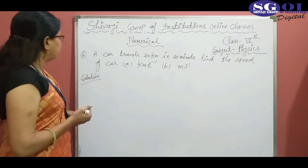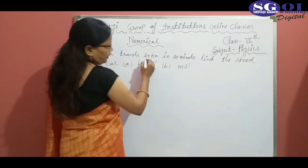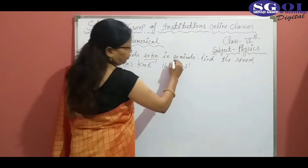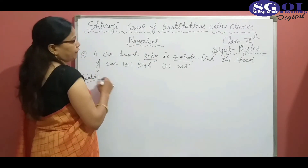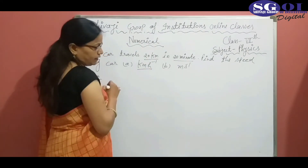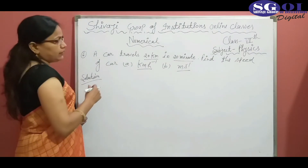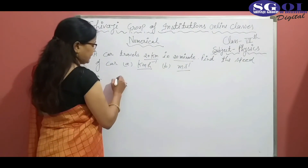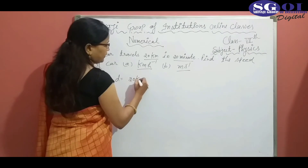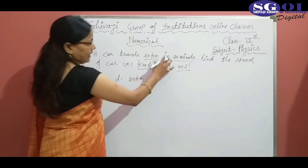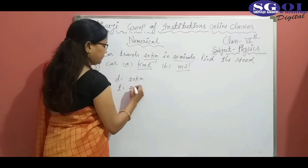Now, numerical number 6: a car travels 20 kilometer in 20 minutes. Find the speed of the car in kilometer per hour and meter per second. In this question, distance is 20 kilometer and time is 20 minutes.